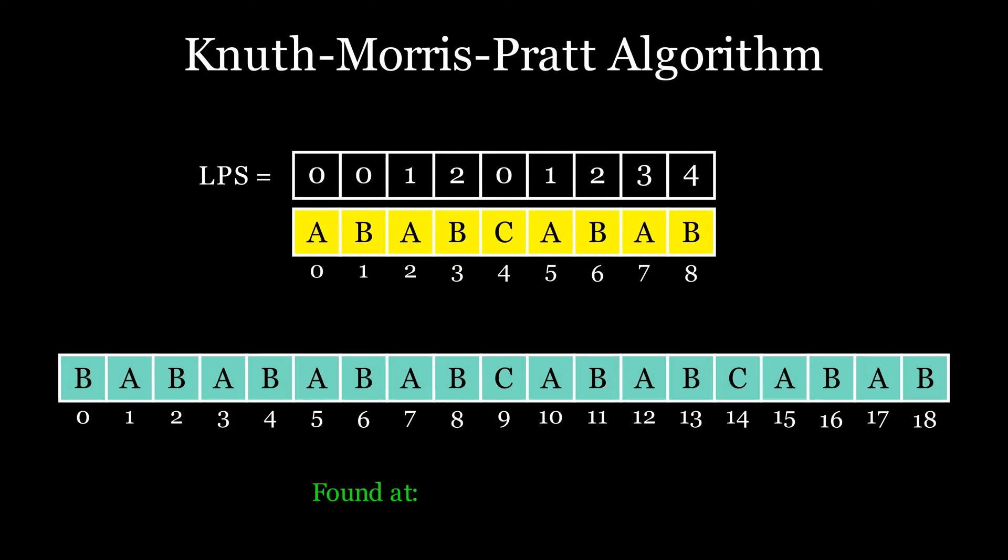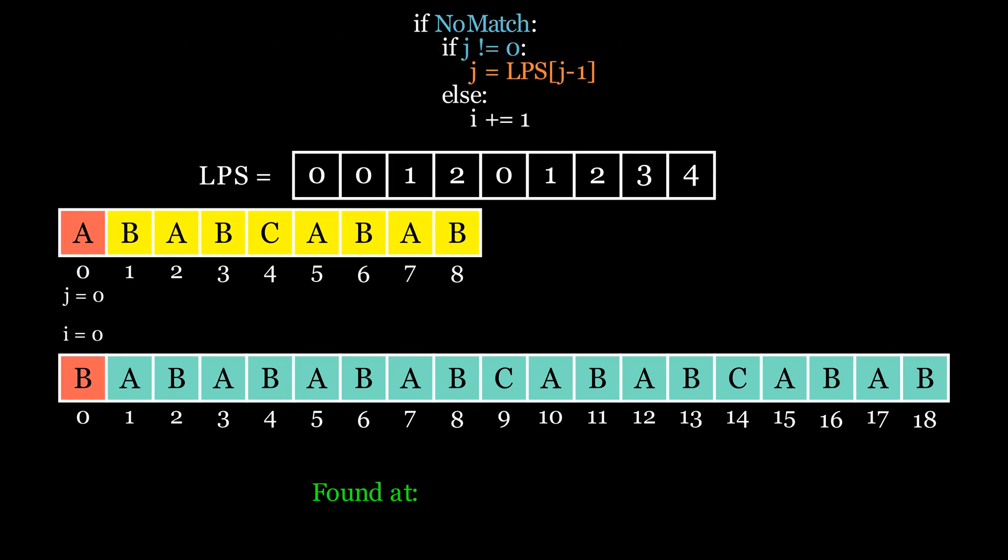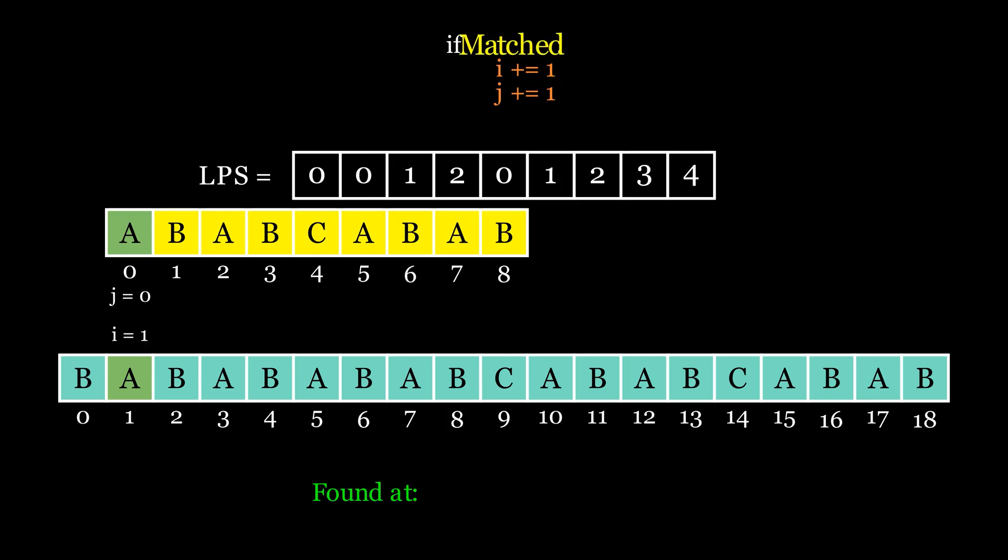Now we will perform the Knuth-Morris-Pratt algorithm using this table. Initialize variable j that will loop over the pattern, and a variable i that will loop over the text. Initially set both to zero index, and start matching the corresponding characters. Here, the first letter did not match when the value of j was zero, so we will increment i by one. And when the corresponding characters match, increment the value of both i and j by one, and repeat the process.